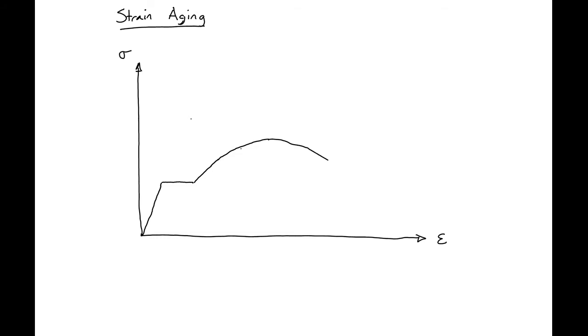So if we were to partially load it, let's come up in blue. Let's load it to our yield plateau and then start into our strain hardening region and then unload it.